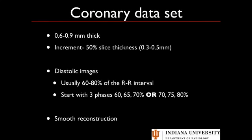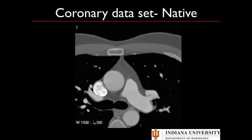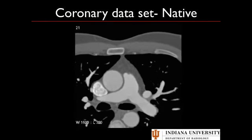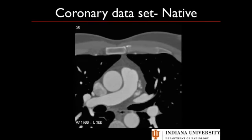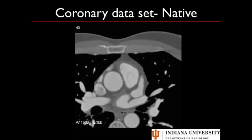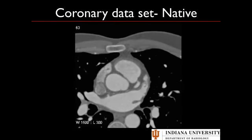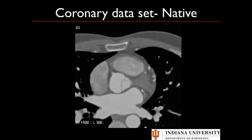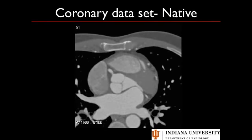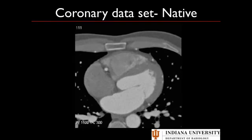Here's a native coronary artery dataset to give you an idea of what the images look like — relatively thin images with about a 50% overlap in the increment. You're going to want a relatively smooth kernel.